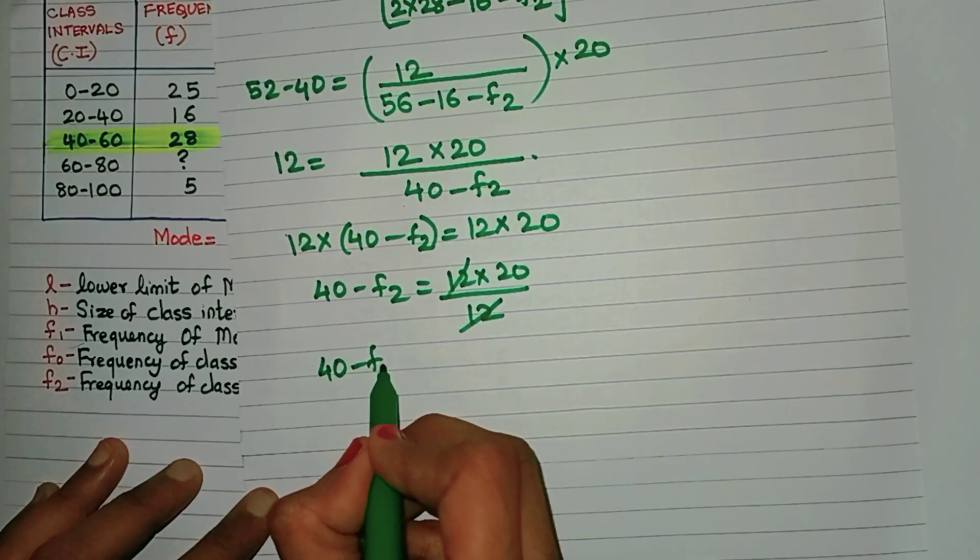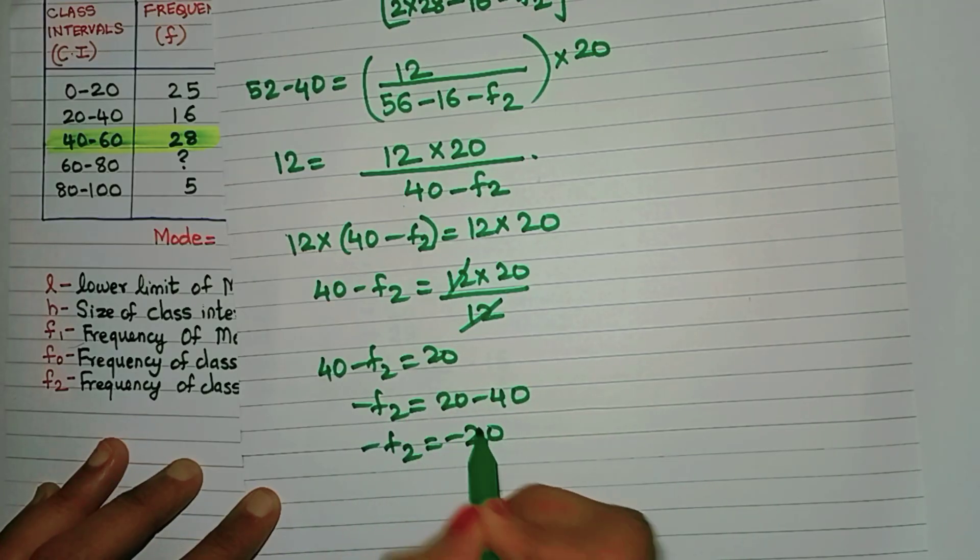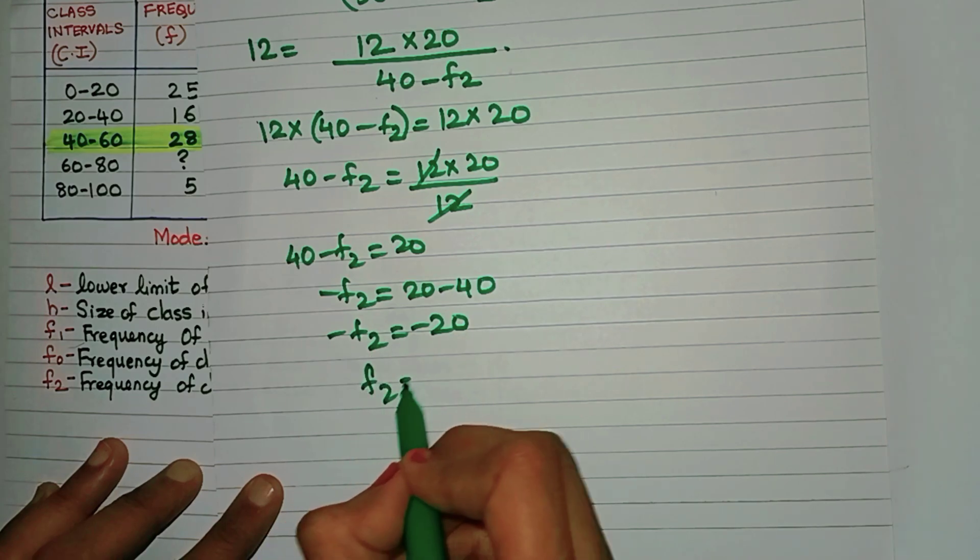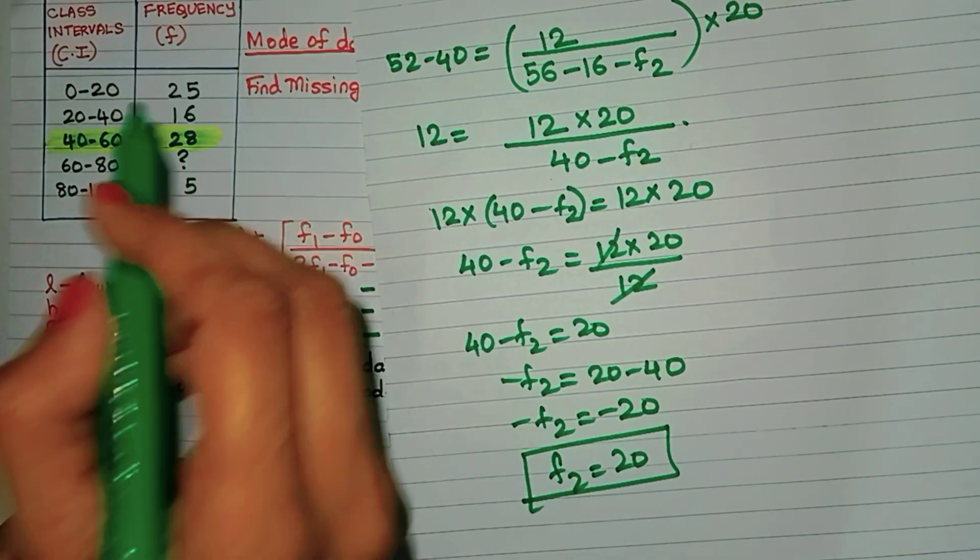So 12 and 12 gets cancelled. That means 40 minus F2 is 20, which means minus F2 is 20 minus 40, minus F2 is minus 20. So what is F2? 20. That means the missing frequency over here is 20.